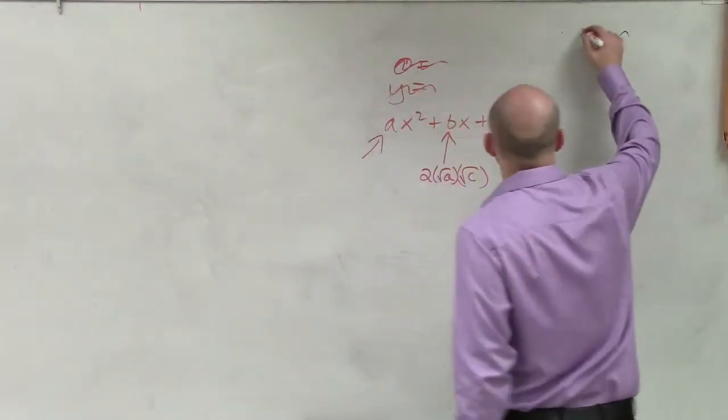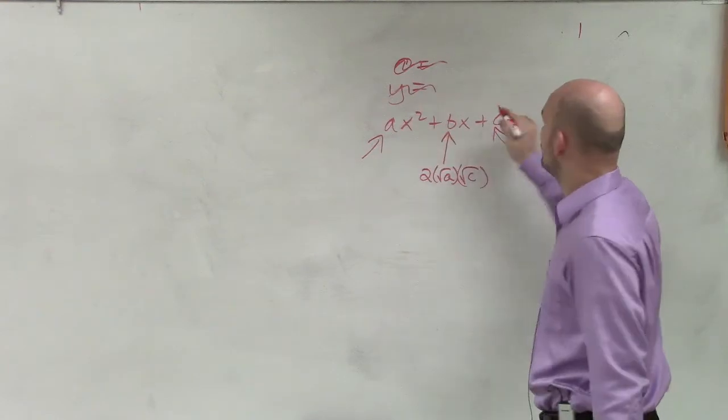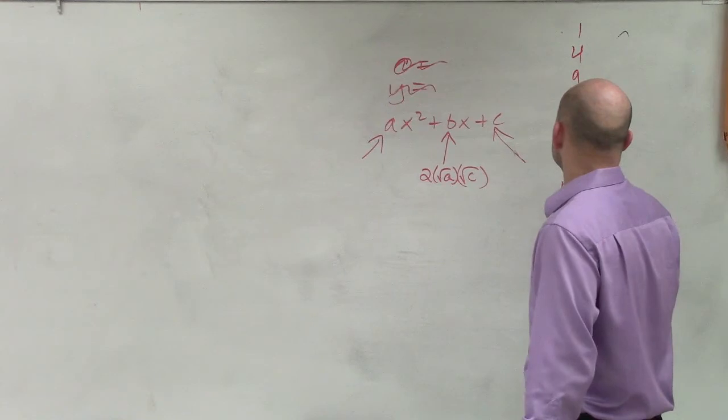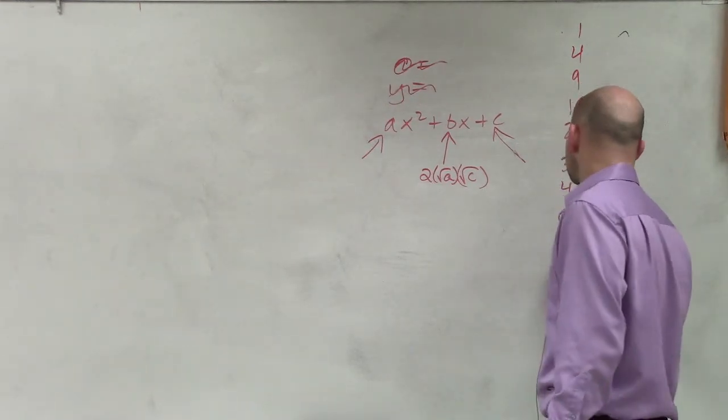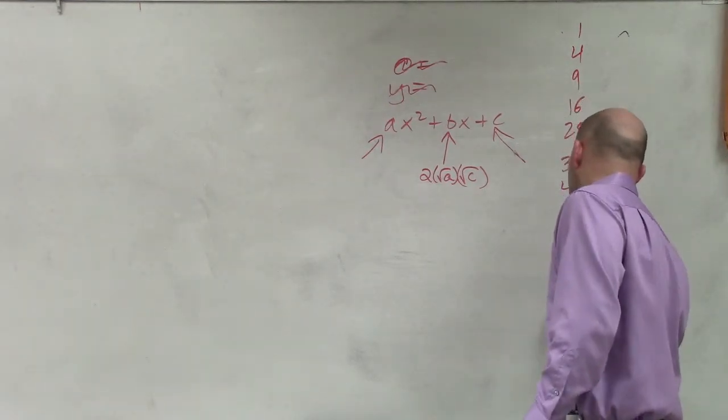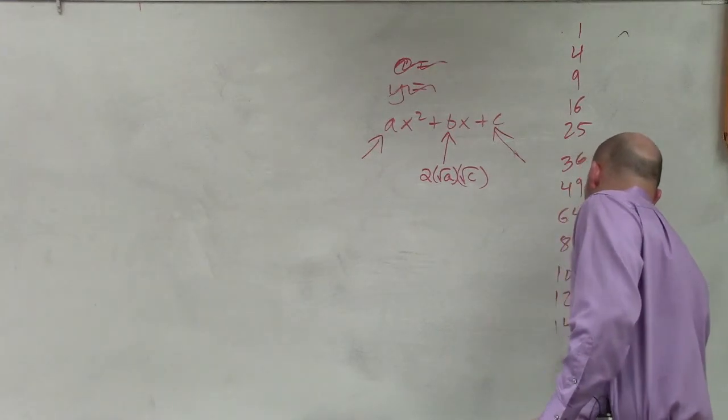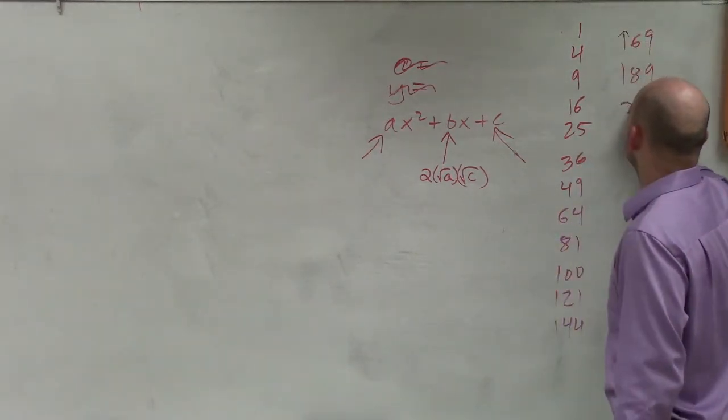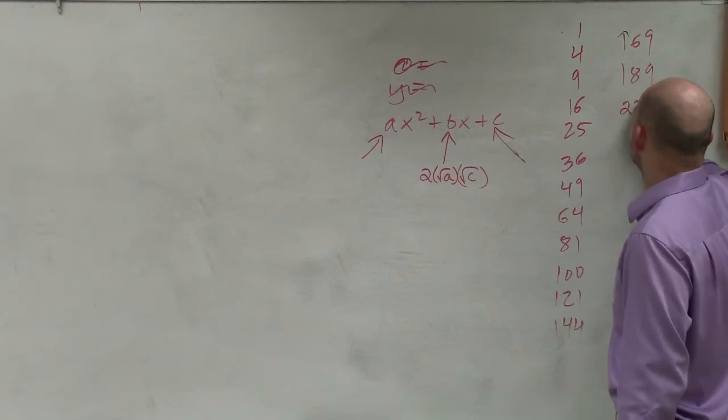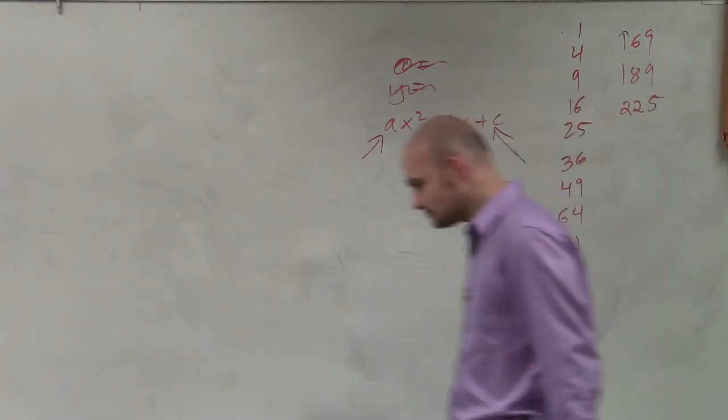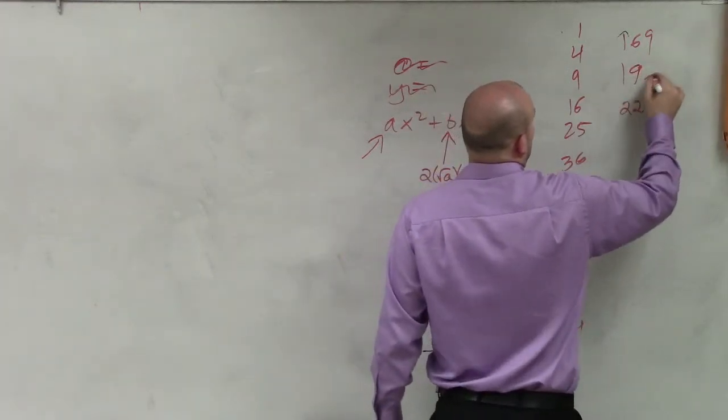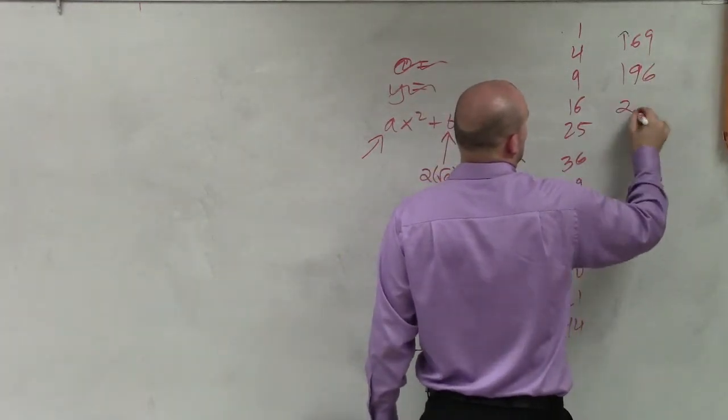And so examples of some square numbers as far as for your coefficient or your constant be 1, 4, 9, 16, 25, 36, 49, 64, 81, 100, 121, 144, 169, 196, and 225.